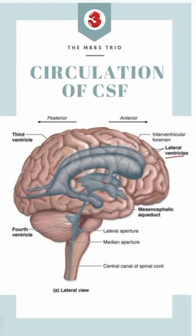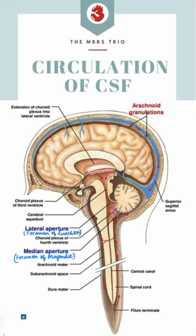CSF is mainly formed in the lateral ventricles, from where it flows downward into the third ventricle through the foramen of Monroe. From the third ventricle, it flows into the fourth ventricle through the aqueduct of Silvius.